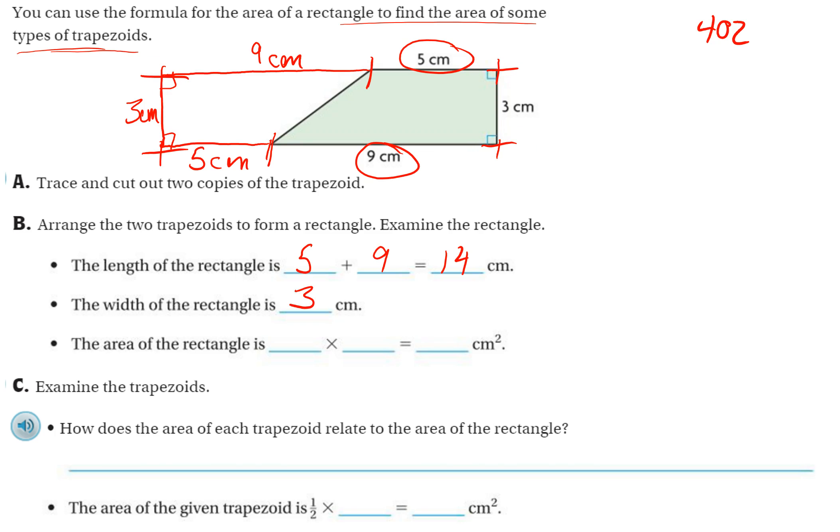The area of the rectangle then would be 14 times 3, length times width or base times height. Same thing. So 14 is how 5 plus 9 would be the 14, and then it's 3 high. So you multiply that. 14 times 3. 3 times 4 is 12, carrying the 1. 3 times 1 is 3, plus 1 is 4. 42 centimeters squared.